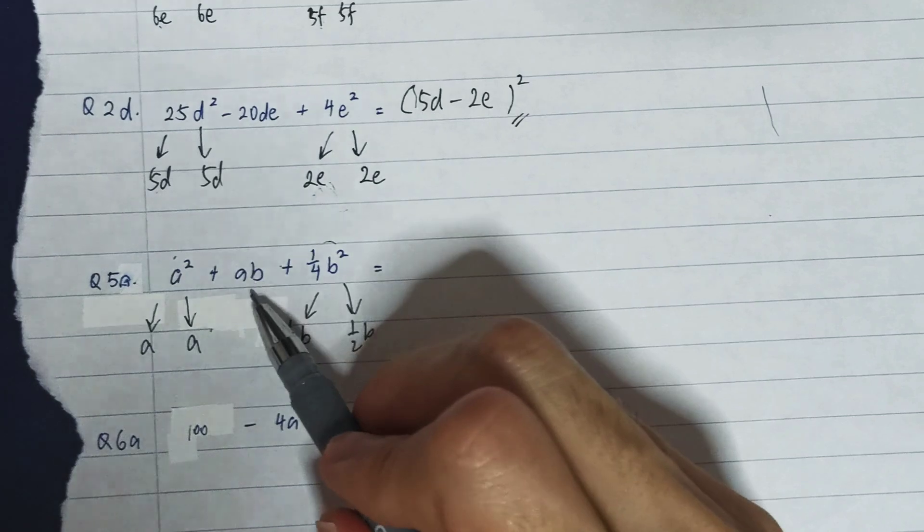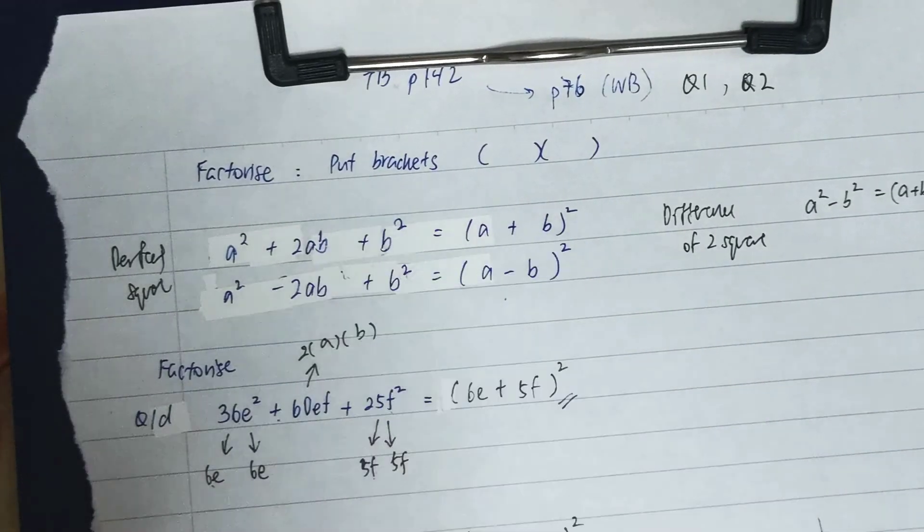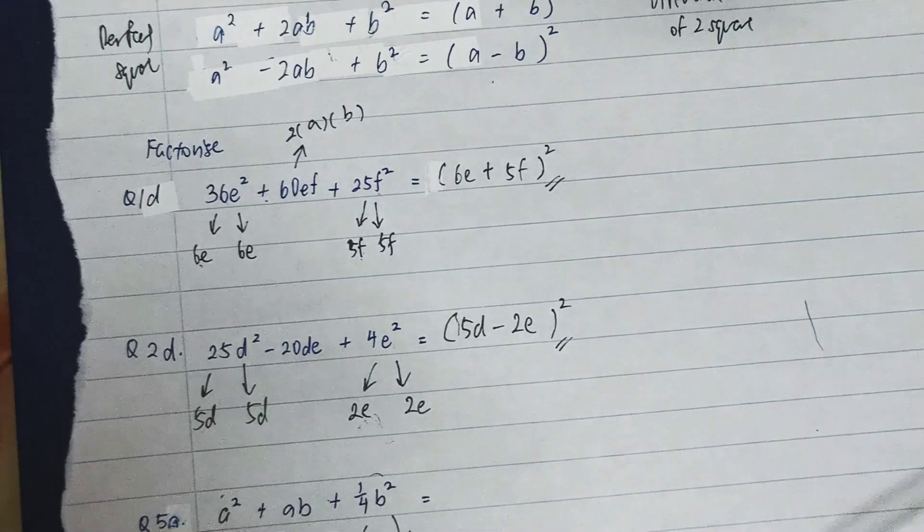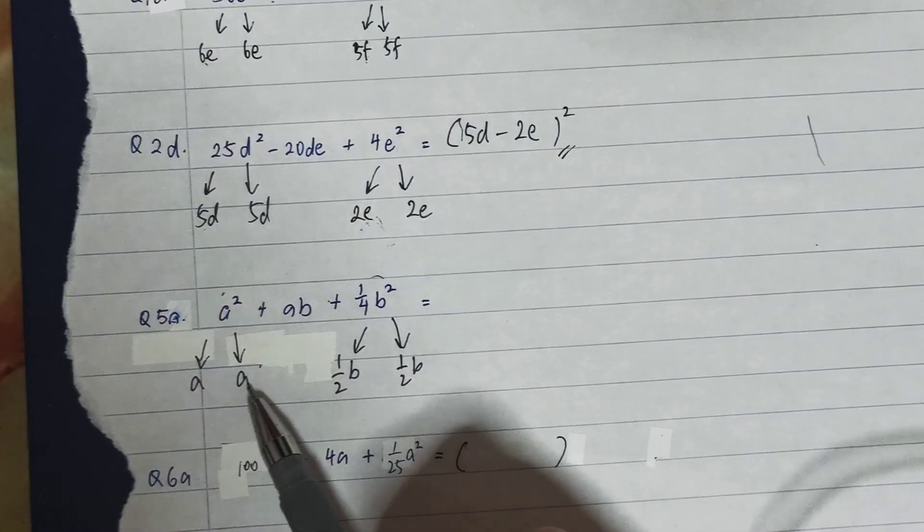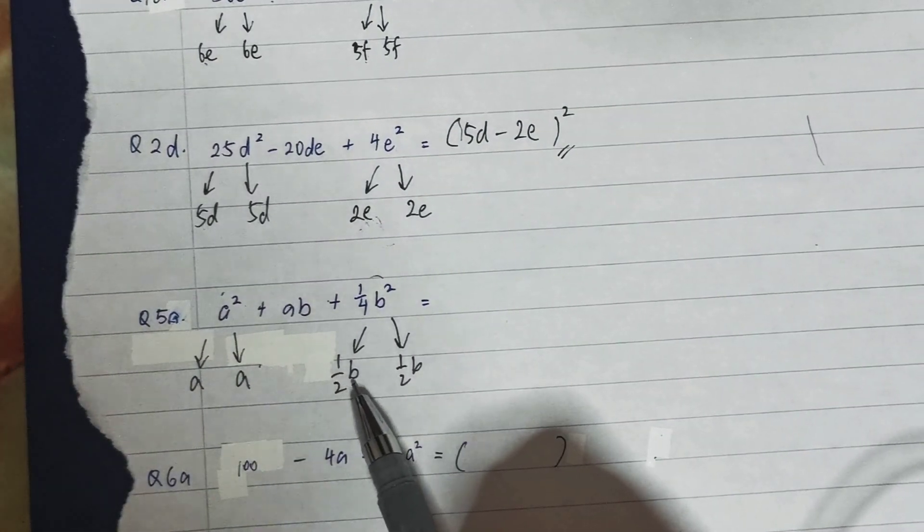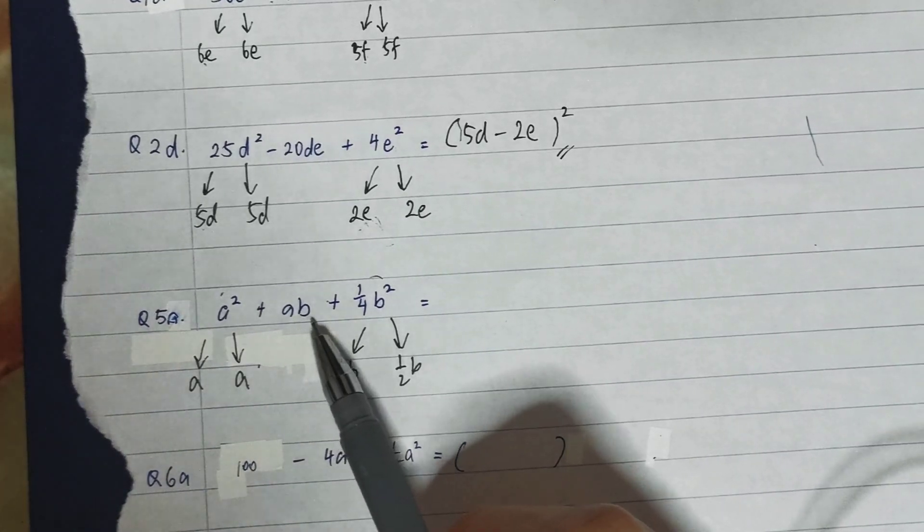Then after that, I need to check whether the middle term fits 2ab, because it's a plus over here. So when I take a times ½b, it will be ½ab, and ½ab times 2 will be ab.